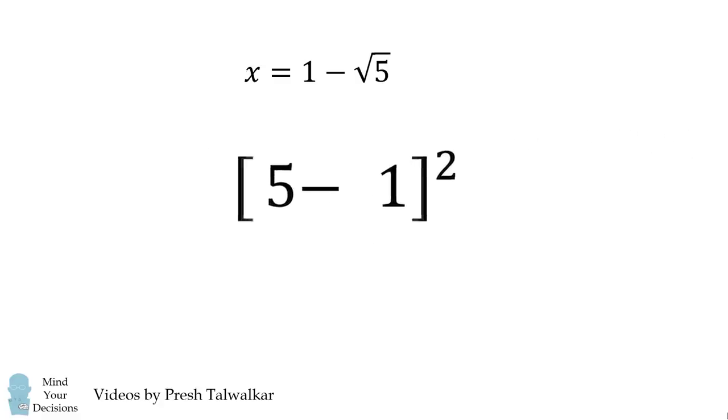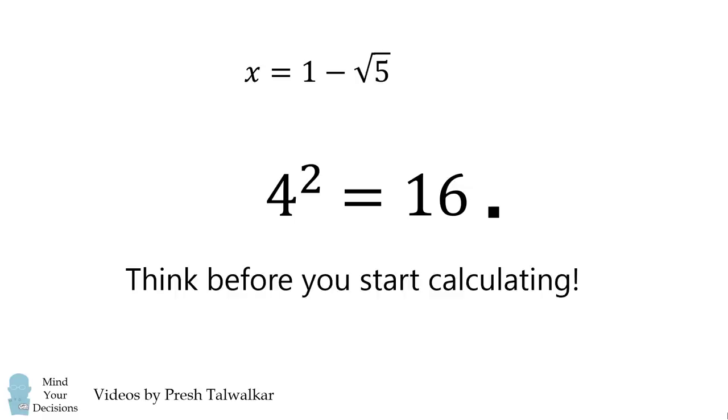The first term will simplify to be 5, and then we have 5 minus 1, which is equal to 4. 4 squared is then equal to 16, and that's our answer. The lesson is that it sometimes helps to think before you start calculating.